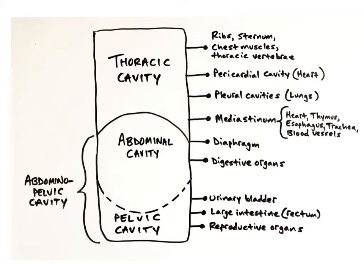The trunk contains two major body cavities: the thoracic cavity and the abdominal pelvic cavity. The abdominal pelvic cavity is divided into the superior abdominal cavity and the inferior pelvic cavity. Both of these cavities hold a variety of organs that are collectively called the viscera.